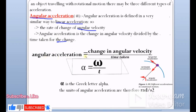Angular acceleration is change in angular velocity over time taken. Angular acceleration is represented by the Greek letter alpha: α = ω/t. This is the formula for angular acceleration.